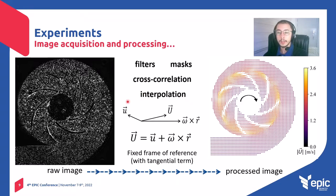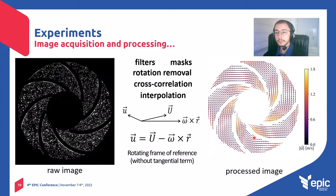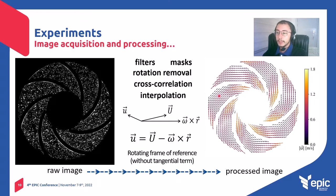The objective is to convert raw images into processed images, as this one on the right. This example of a processed image is actually a velocity field where we can see the velocity vectors — in this case, the absolute velocity of the velocity triangle for turbomachines. But we can also add another step to our processing procedure, the rotation removal, and then we obtain a velocity field showing the relative component of the velocity triangle.